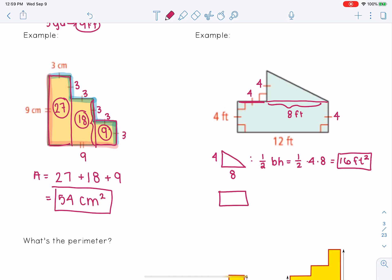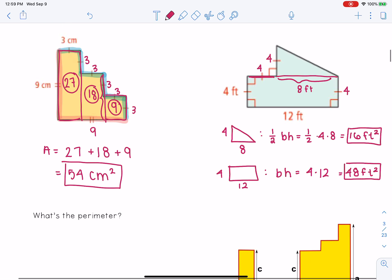Our rectangle is a 4 by 12. And the area is base times height, which is 4 times 12, which is 48 feet squared. So to find the total, we just add them up. 16 plus 48 will give us 64 feet squared.